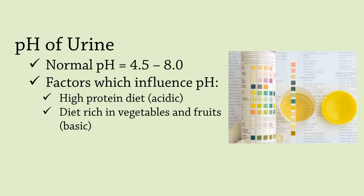The pH of urine is measured using dipsticks, litmus paper, or pH paper, as can be seen from the image on the right.